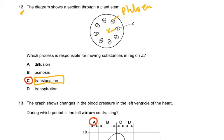Transpiration does not take place in the xylem of the stem — transpiration occurs in the leaves. That is an important distinction and could be a very good MCQ.